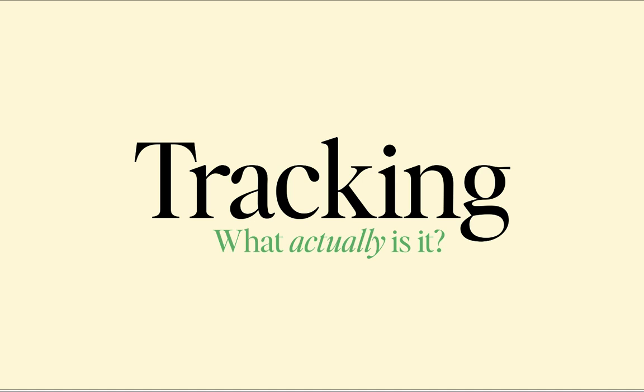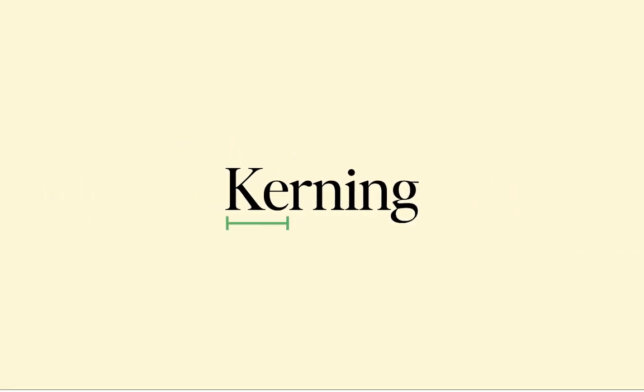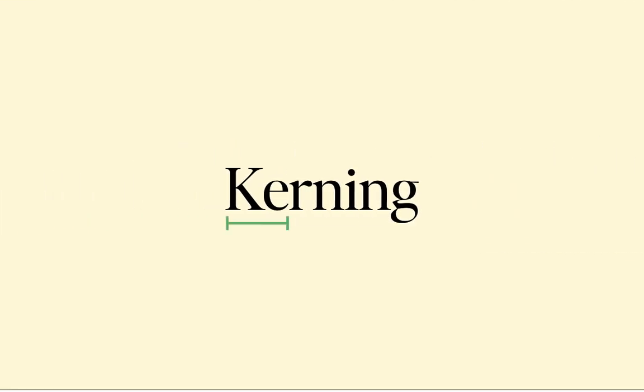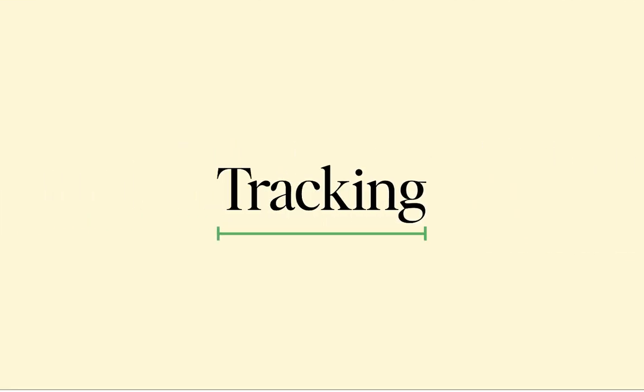Let's start with what tracking actually is. While kerning adjusts space between specific letter pairs, tracking adjusts space between a whole range of characters uniformly.